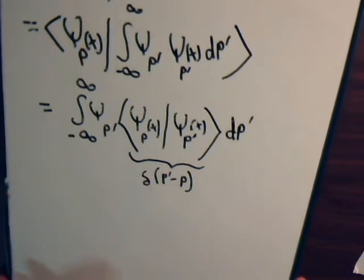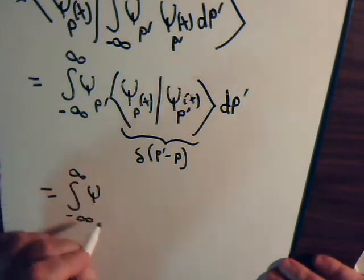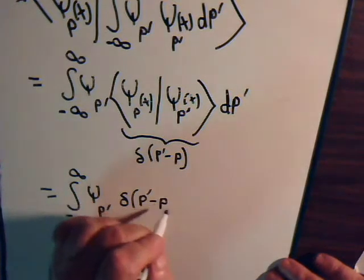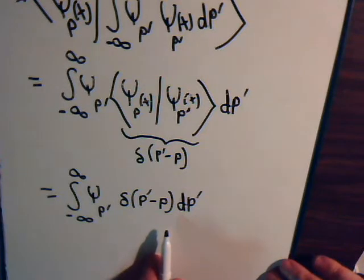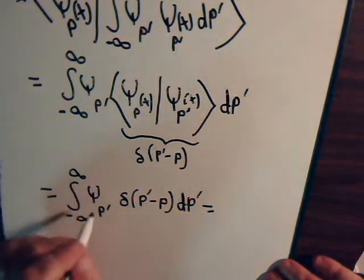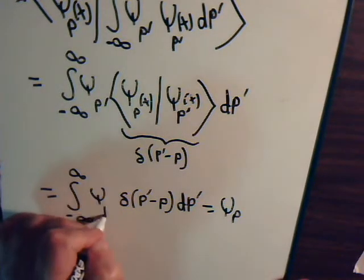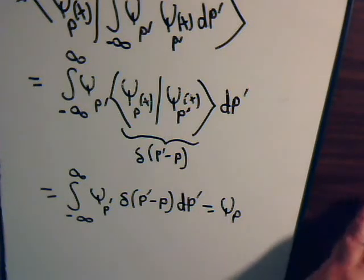So our integral now becomes the integral of psi(p-prime) times the Dirac delta function of p-prime minus p, dp-prime. The Dirac delta function is zero everywhere except when p-prime equals p, so this becomes psi of p — treating it like a constant pulled outside the integral — and what's left inside the integral of the Dirac delta function equals one, as we've discussed in previous videos. So we have demonstrated that our inner product equals psi of p.